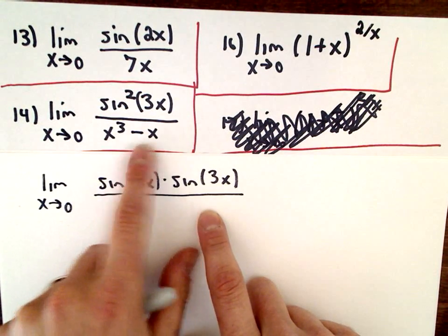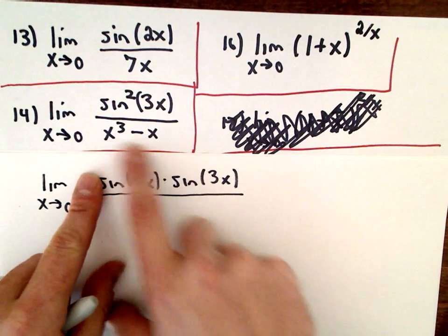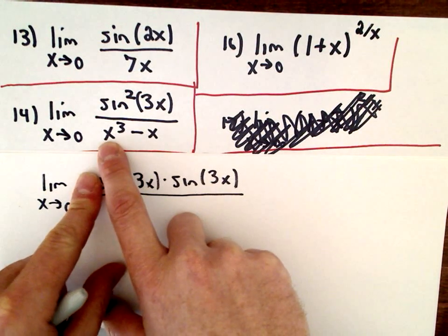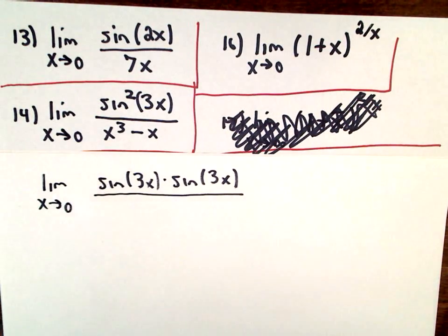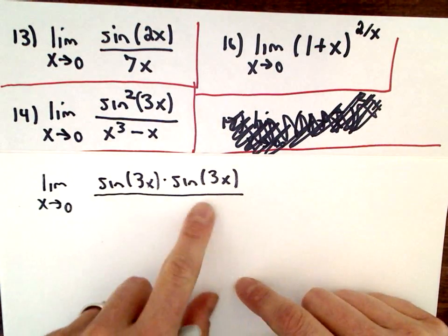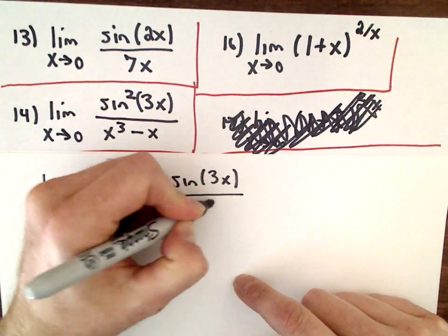So I need some x's down here. Well, I look at this and I say, oh, x to the third minus x. At first I would think, I could factor an x out of there. That would feel like the natural thing to do. I could factor out x, have x squared minus 1, but that's not enough x's. I need an x and an x. I really need an x squared. I'm just going to still factor out x squared from that expression.